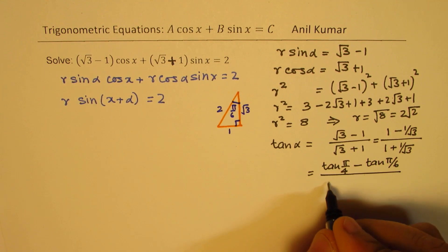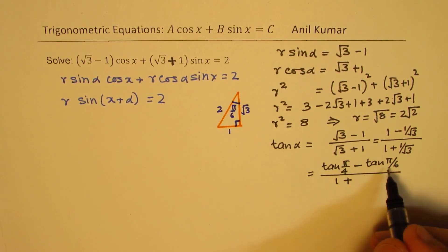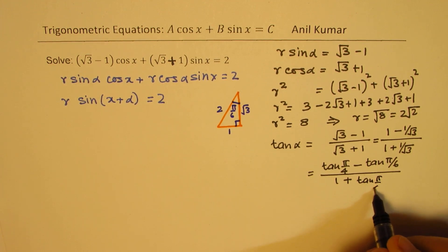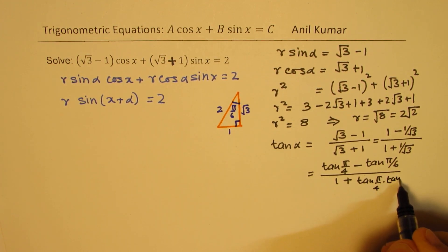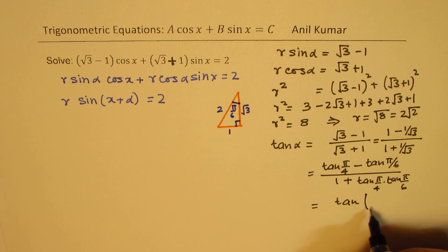Over 1 plus you could write this as product of tan pi by 4 and tan pi by 6, just to complete the formula. So this could be written as tan of a minus b, which is pi by 4 minus pi by 6.